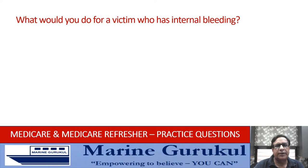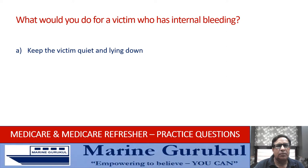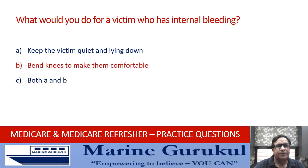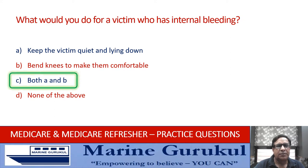What would you do for a victim who has internal bleeding? Keep the victim quiet and lying down; bend the knees to make the victim comfortable; both A and B; or none of the above. The answer is C — both A and B would be the actions required in case a victim is suffering from internal bleeding.